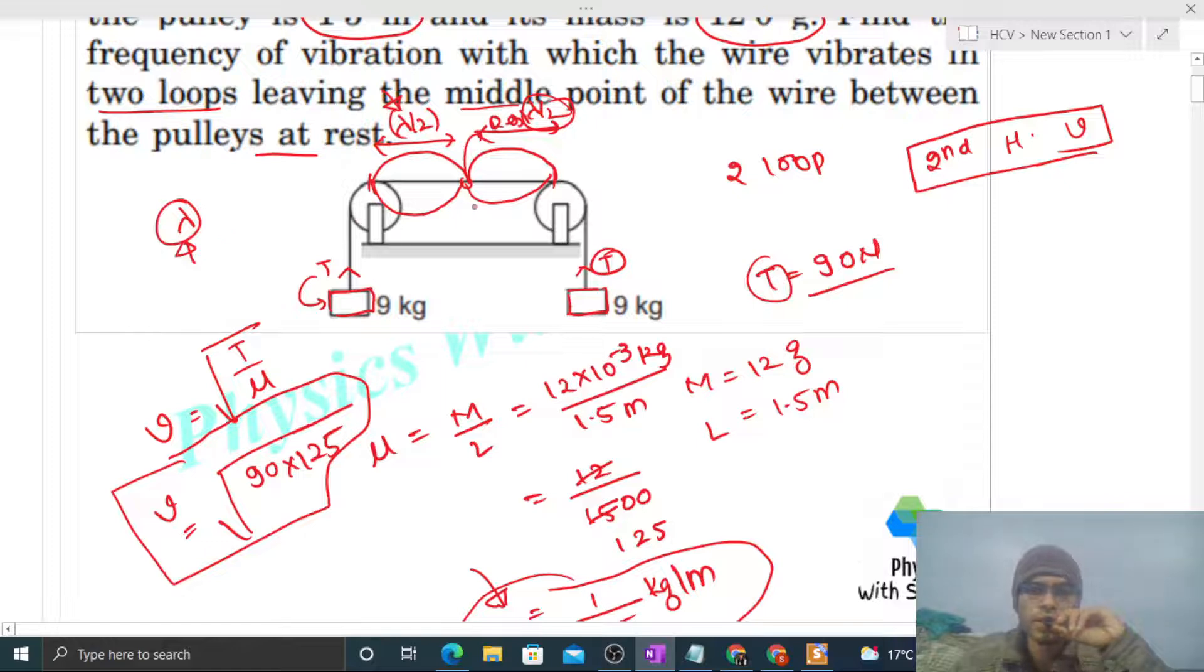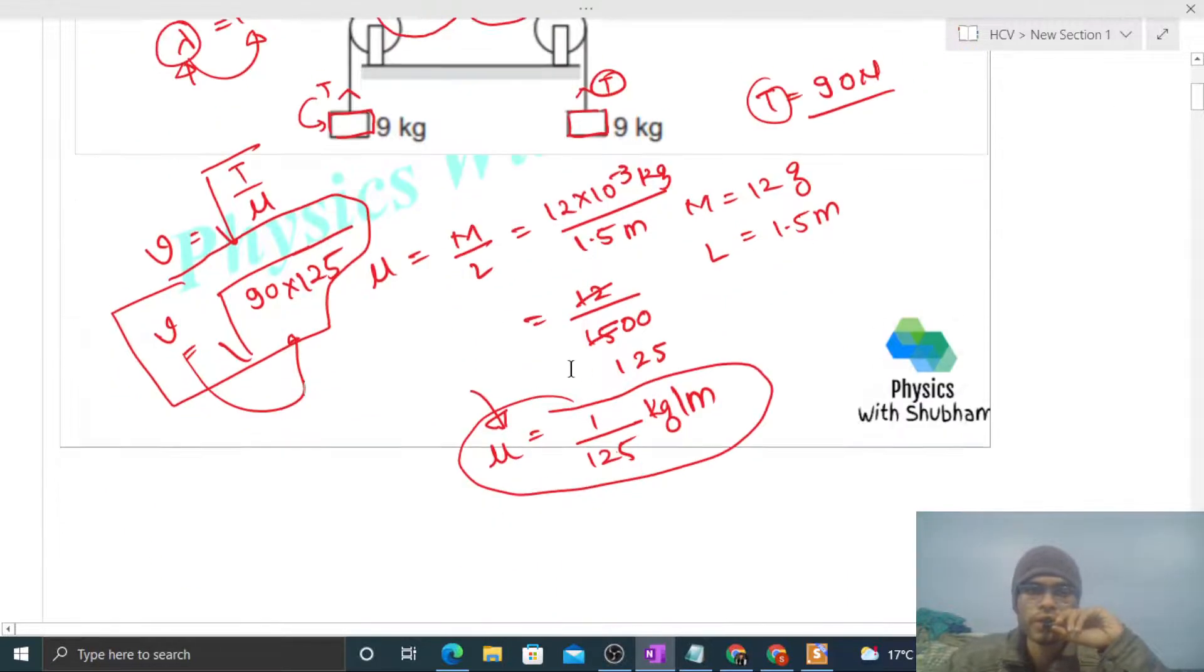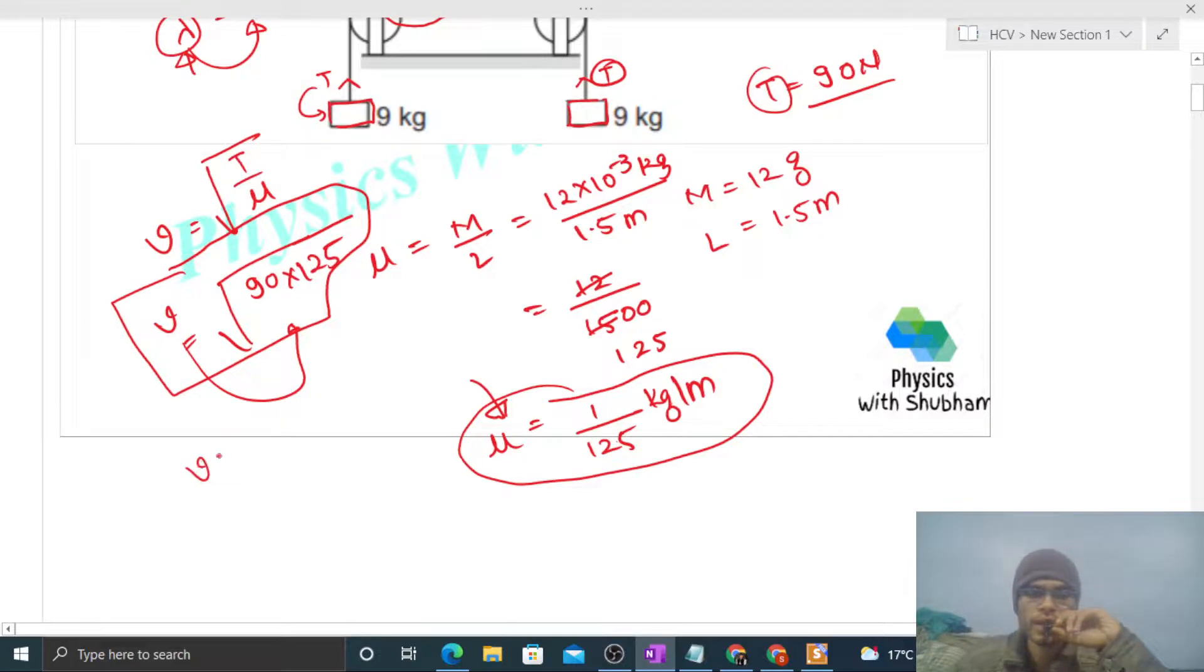The length of the wire between the pulleys is given as 1.5 meters, so we know the wavelength. And we know the speed also, so we can easily find the frequency. Because speed is frequency times wavelength, frequency will be speed divided by wavelength. Speed is square root of 90 times 125 divided by wavelength, which is 1.5. You can calculate this numerical value. This will be the frequency in SI units, which is Hertz.